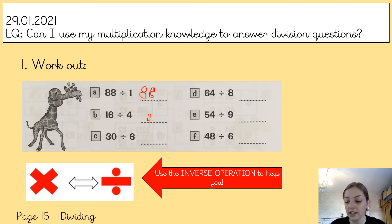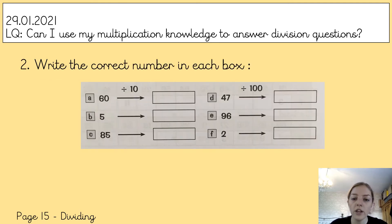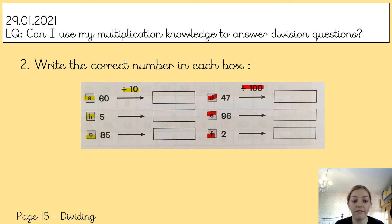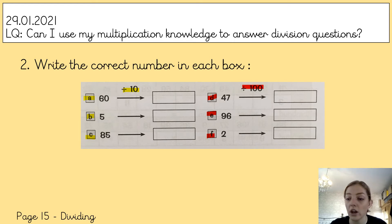Moving on to Question 2: you need to make sure you're writing the correct number in each box. For parts a, b, and c you're dividing by 10; for d, e, and f you're dividing by 100. I'm going to show you a really good method to help, because 5 divided by 10 might be a little tricky, and 2 divided by 100 might feel a bit new or different. So we're going to have a go at doing it together.